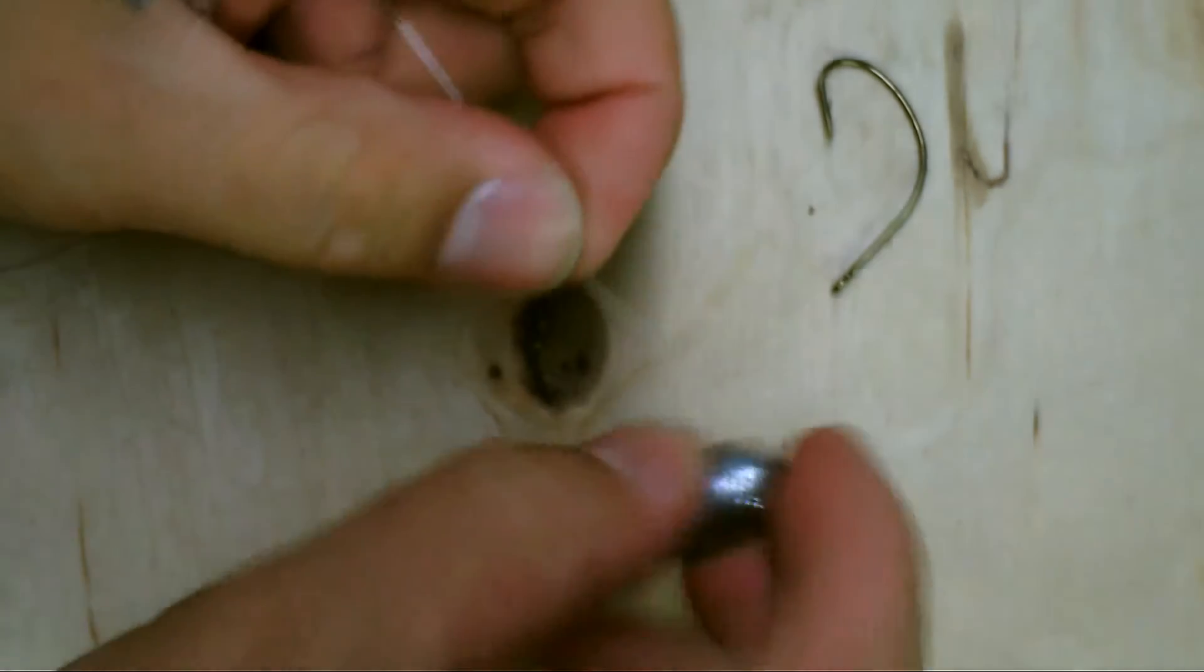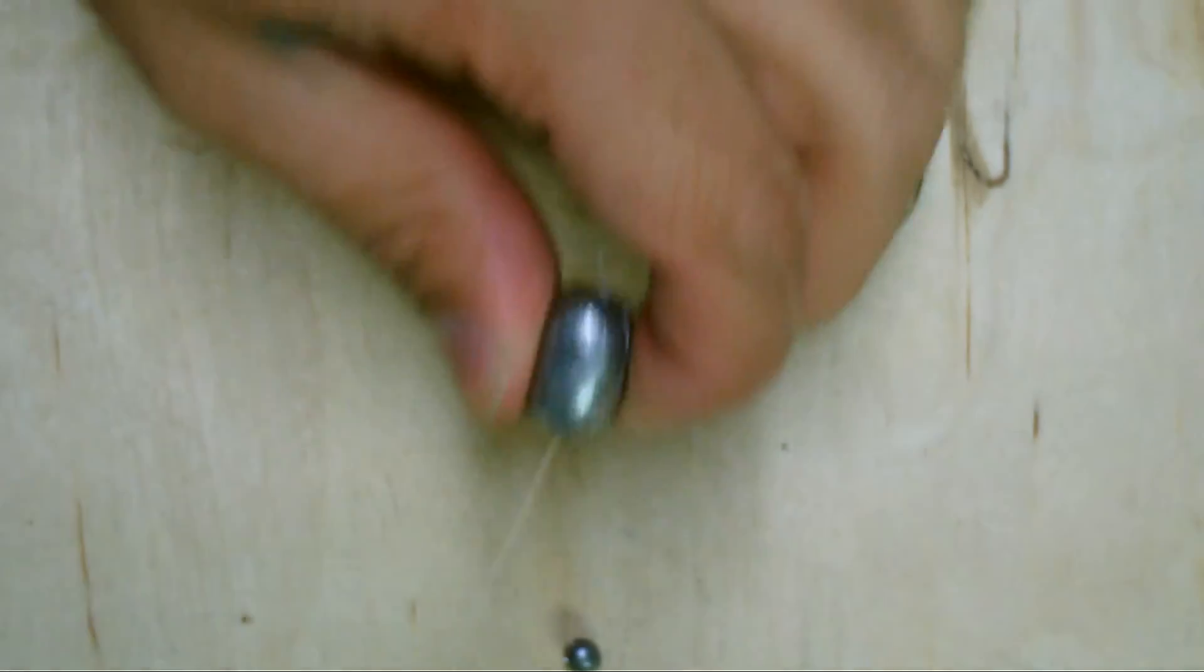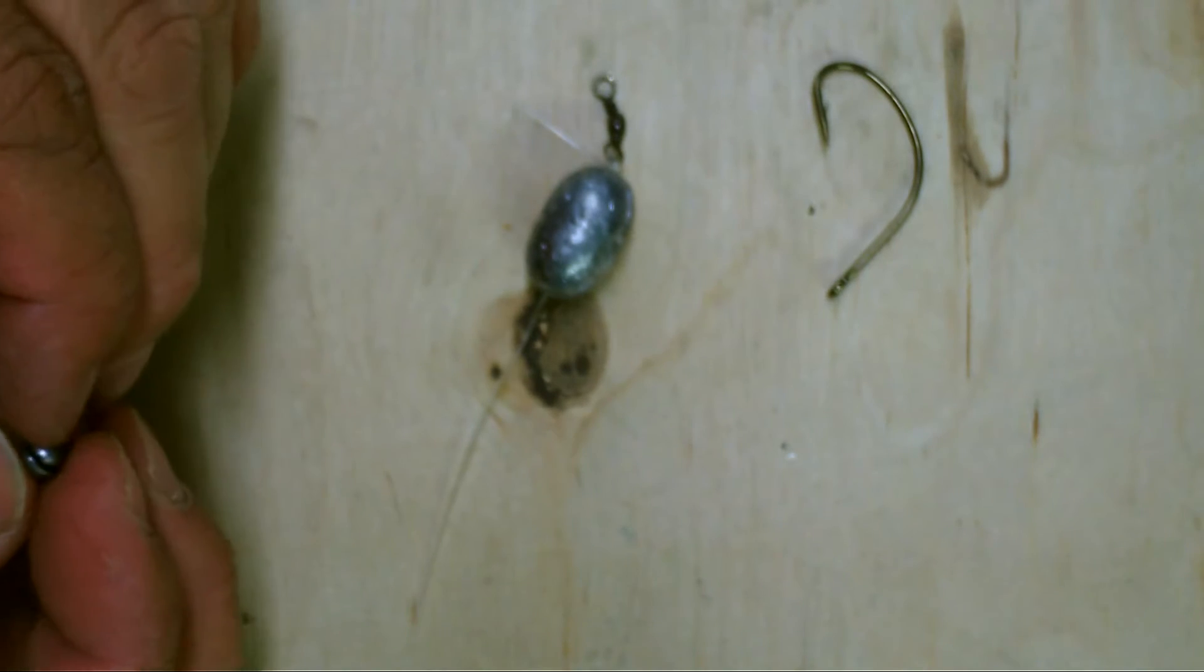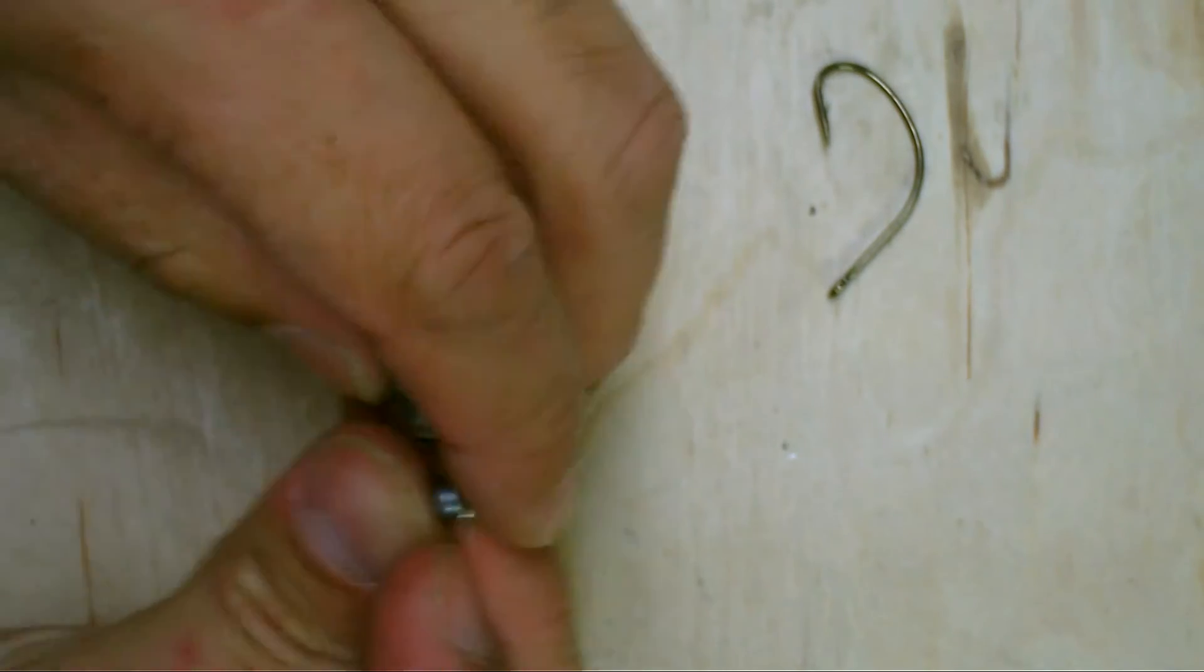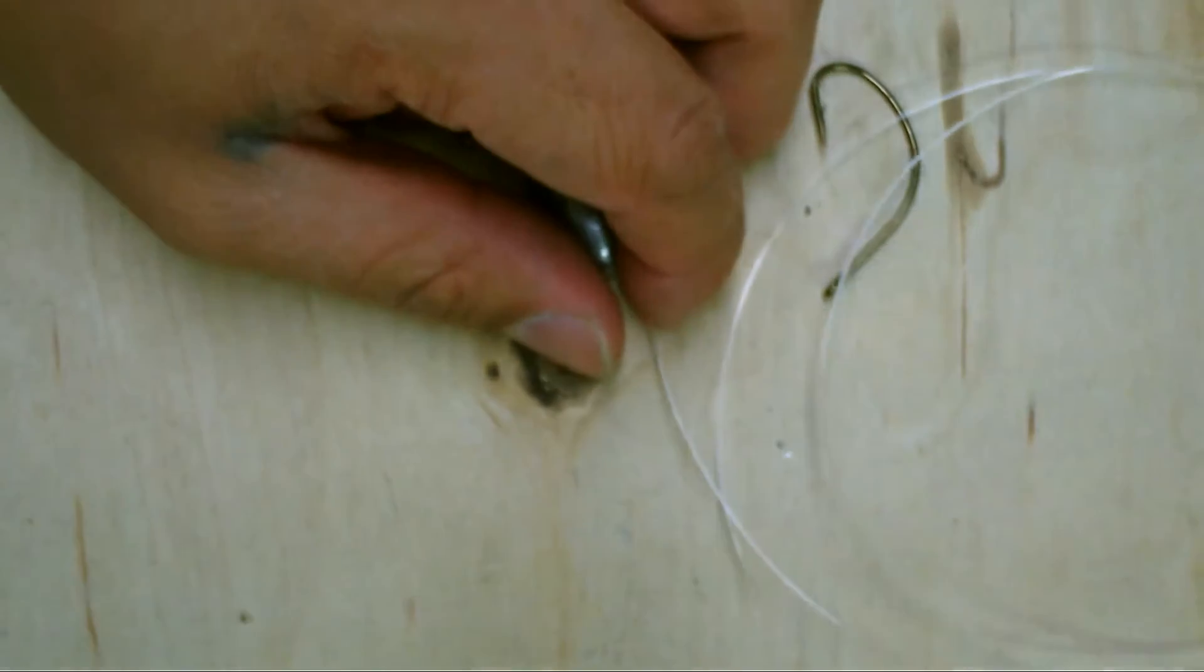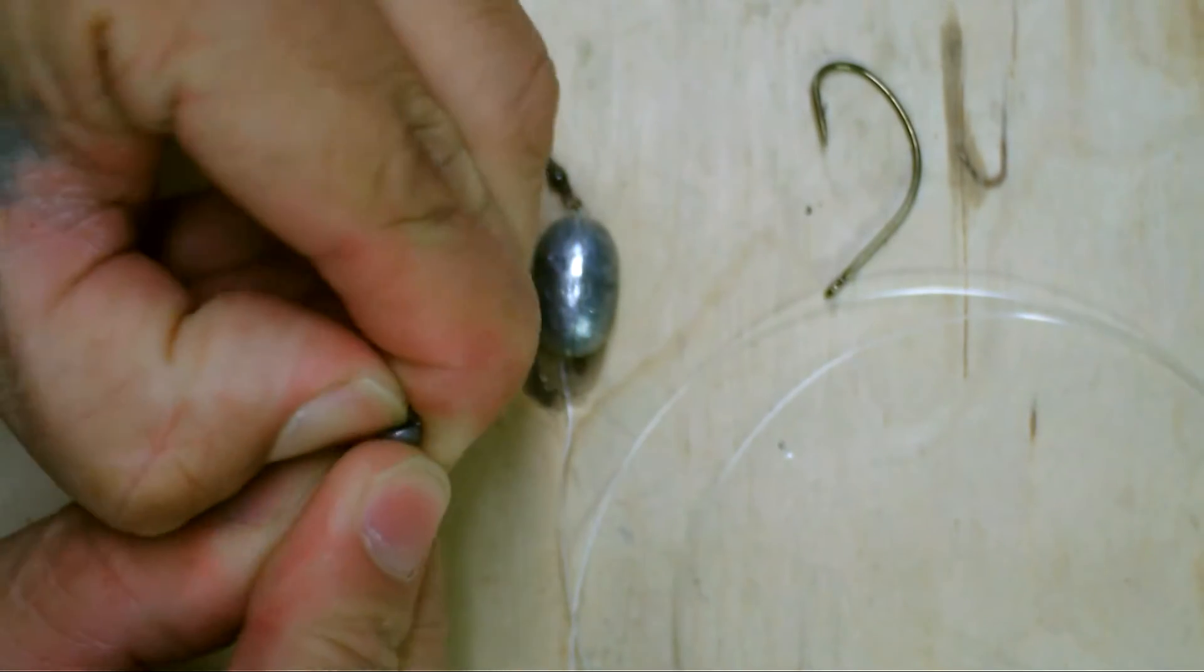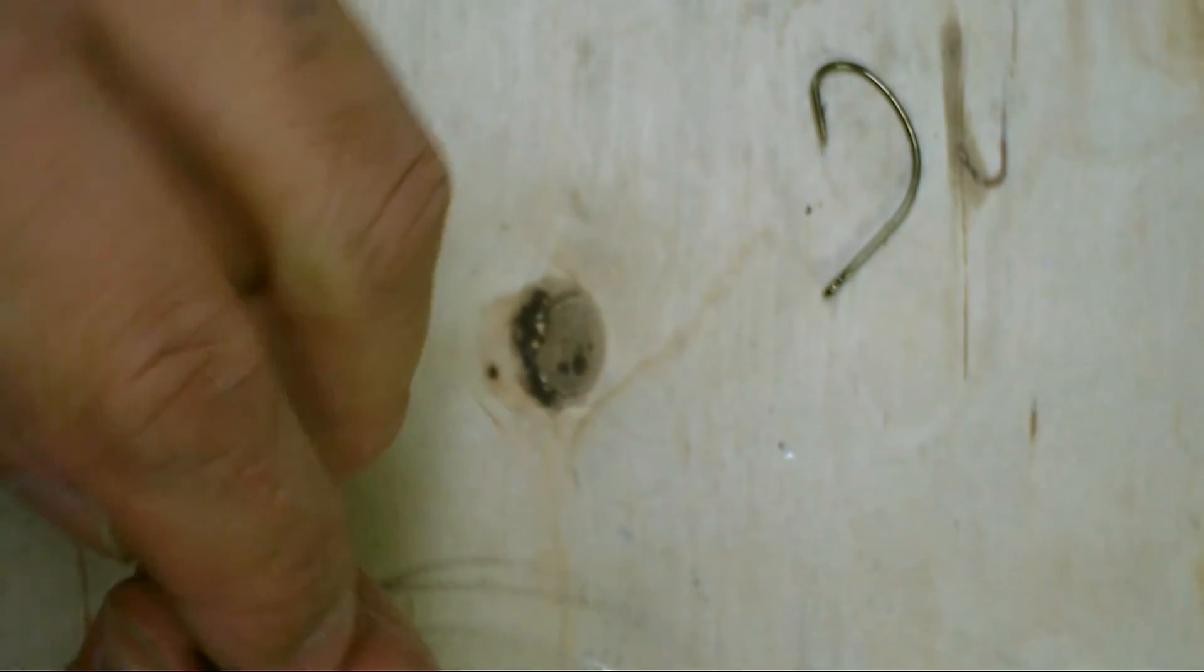Okay, and you're going to go ahead and feed that egg weight through. Now on the other side of the egg weight, we're going to go ahead and clamp this down. Alright, so on the other side we're going to clamp this down, and that is going to stop the egg weight.